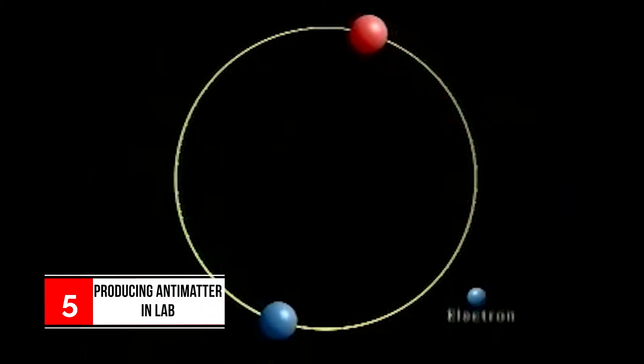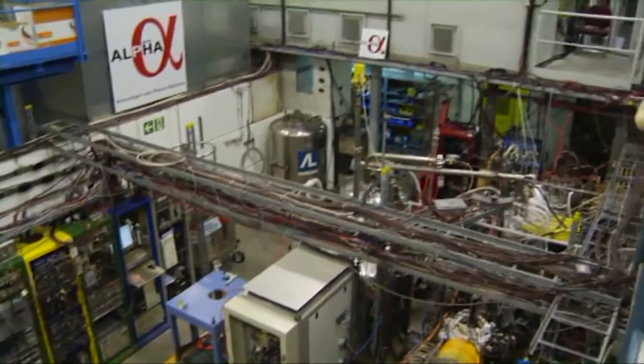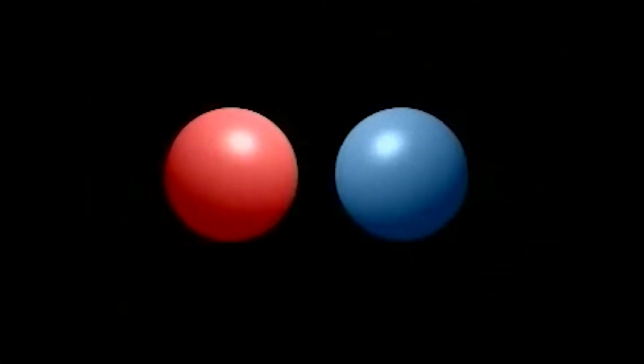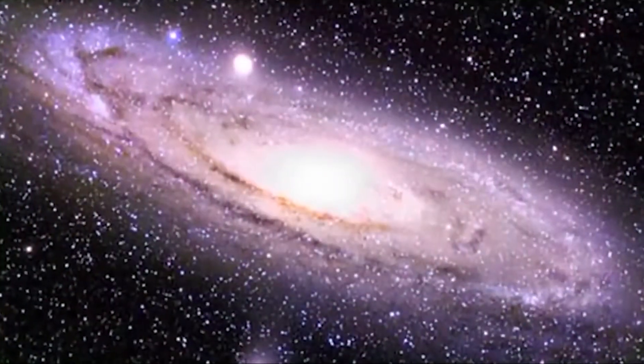Number 5: Producing antimatter in lab. Antimatter is possibly the answer to all our future energy needs. Scientists have not been able to find as much of it in the universe as matter, which happens to be a big mystery in itself. Scientists have been able to successfully create and keep antimatter in the lab.